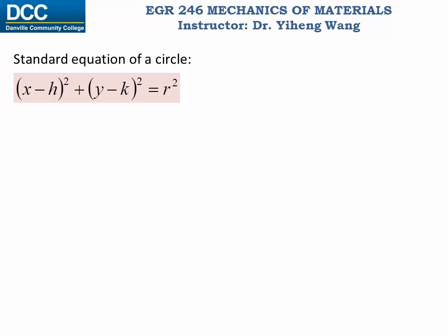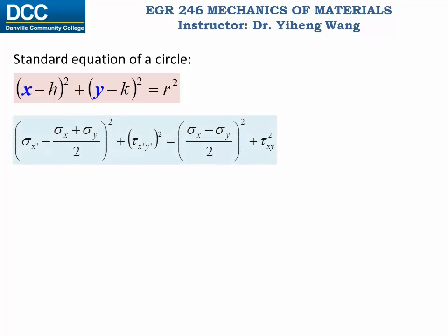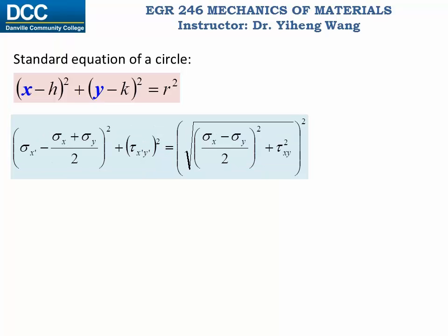If you recall the standard equation of a circle, only x and y are variables. Now let's look at this equation that we just derived from the general equations, which can be written equivalently this way. Notice the similarity between this equation and the standard equation of a circle, since only these two are variables — sigma x prime and tau x prime y prime — while sigma x, sigma y, and tau xy are all parameters.